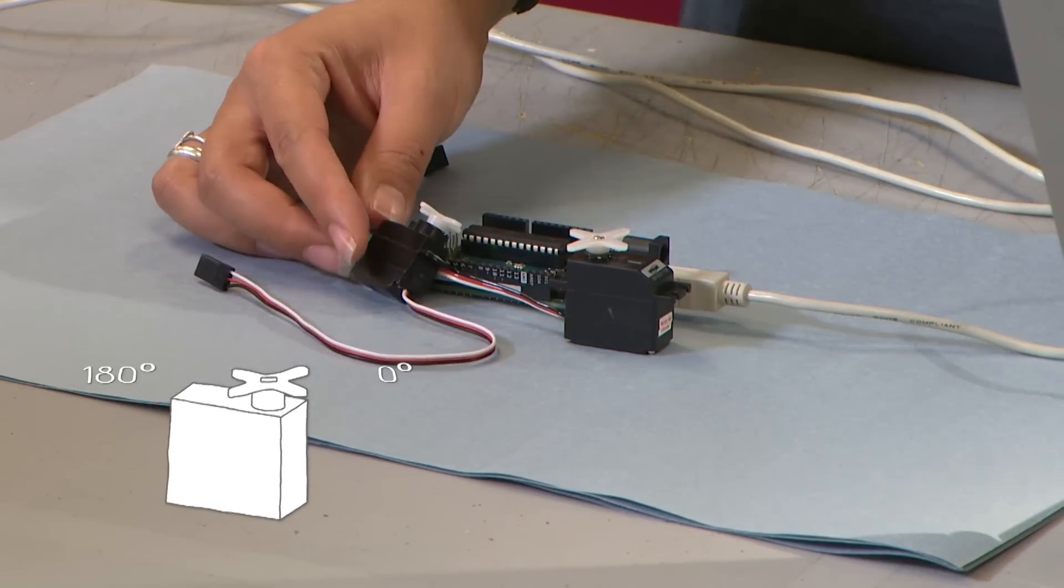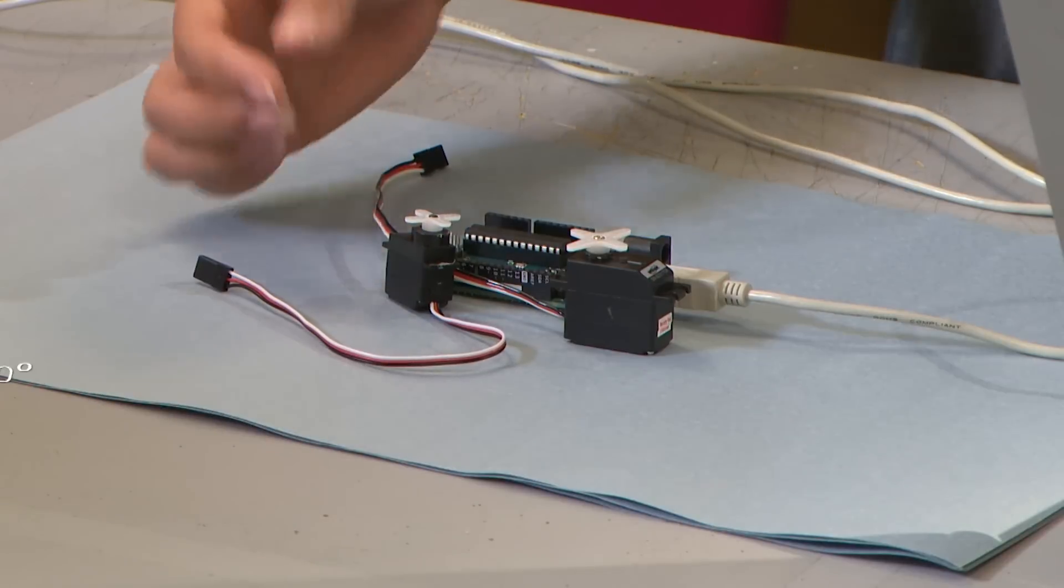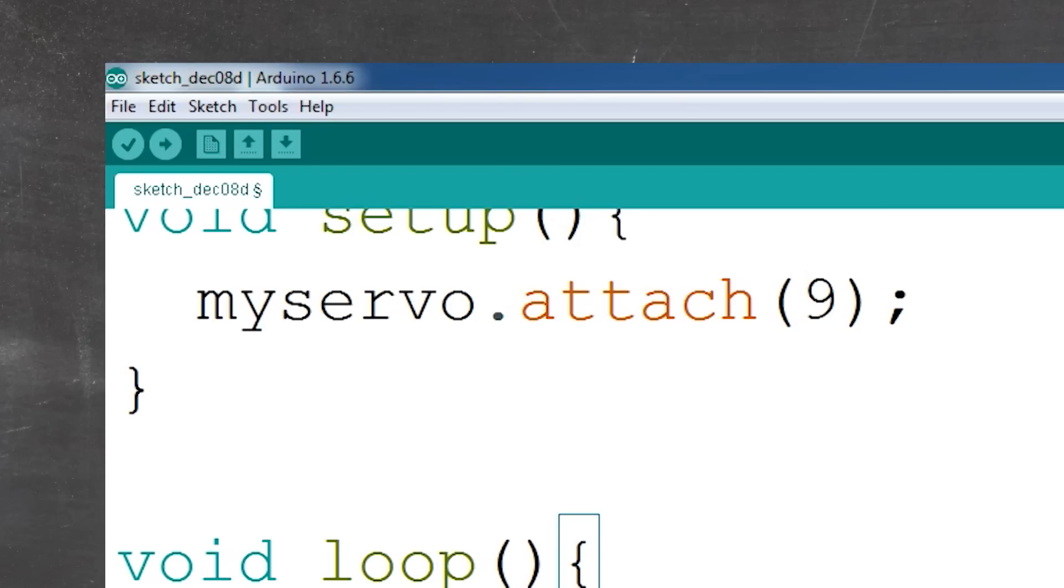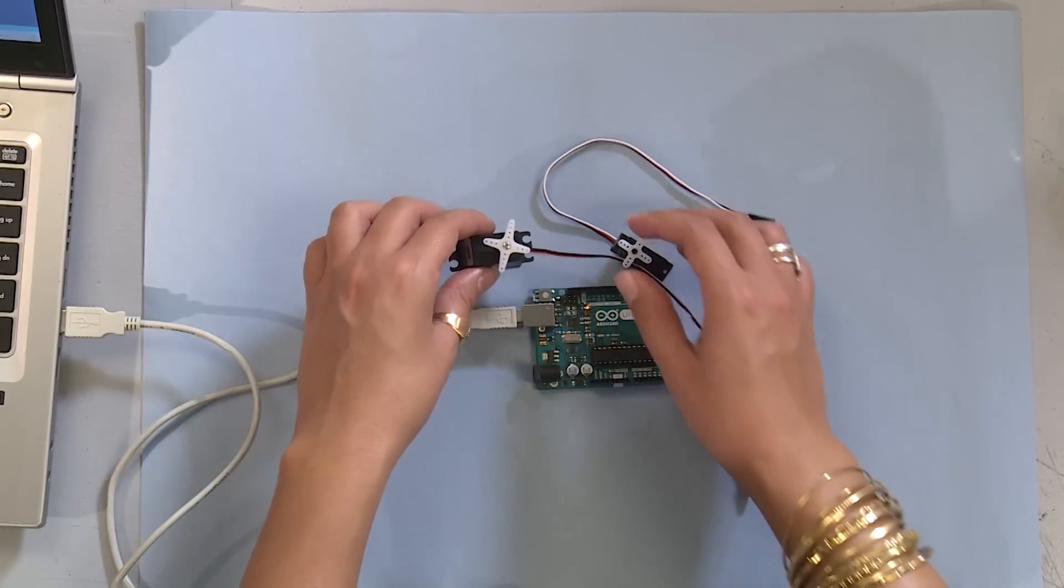For the small servo, it's going to go to position 0 degrees, then position 180 degrees, then position 0 degrees. So we want to see that actually happen. We have to upload our code by pushing the arrow pointing to the right. When it's done uploading, let's go ahead and start connecting them.